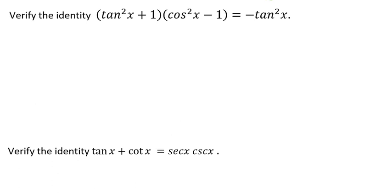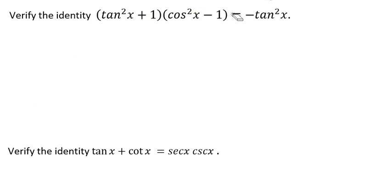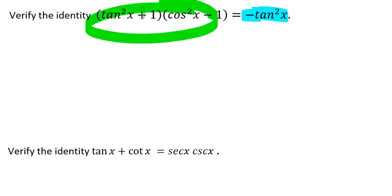In this video, we're going to practice verifying identities. In this example, we have the tangent squared of x plus 1 times the cosine squared of x minus 1 equals the negative tangent squared of x. Our goal is to make the left-hand side match the right-hand side. We choose the left-hand side because it's a little bit more complex, so there's a little bit more to work with there.